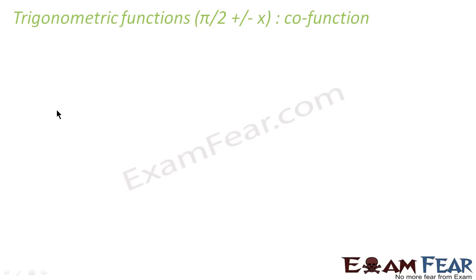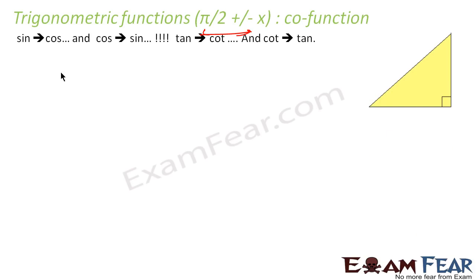Now we'll see trigonometric functions where we add or subtract π/2. In such cases, sine becomes cos, cos becomes sine, tan becomes cot, and cot becomes tan. So remember: sin↔cos, cos↔sin, tan↔cot, cot↔tan.